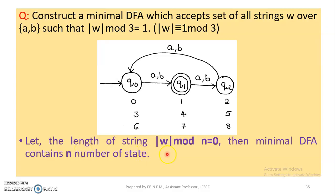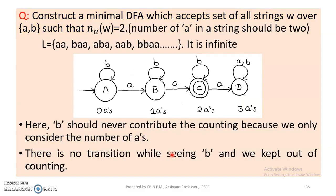Let the length of the string be n. Then the minimal DFA contains n number of states. Since 3n is equal to 0, the number of states in the minimum DFA is determined by this condition.